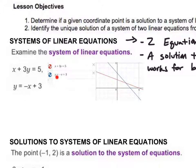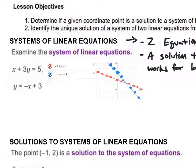The red line is x plus 3y equals 5, and the blue line y equals negative x plus 3 is here. I have points all along the blue line that will work for the blue graph — any point on the blue graph is a solution to that equation. Similarly, any point on the red line would work for the red equation.